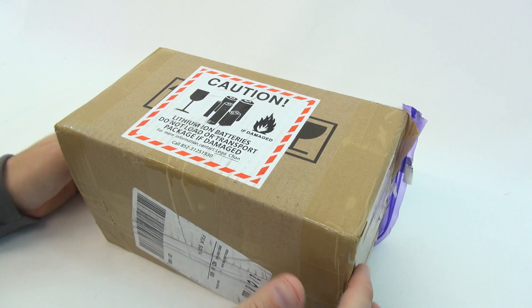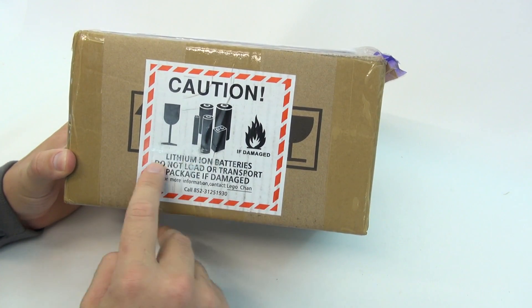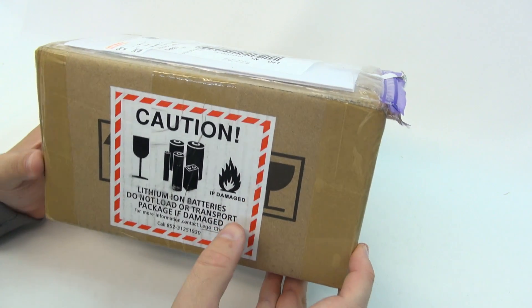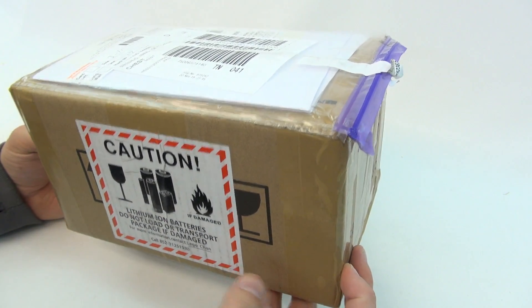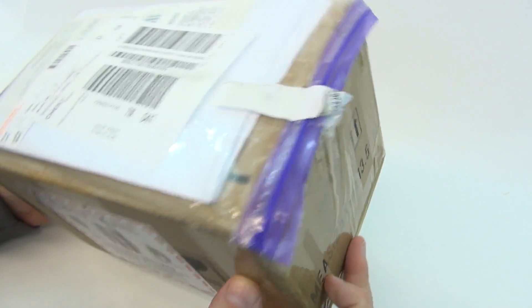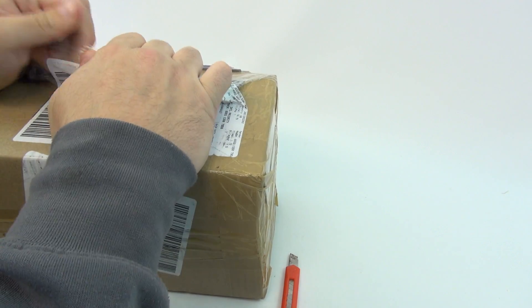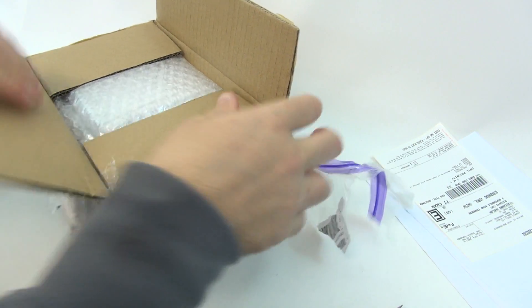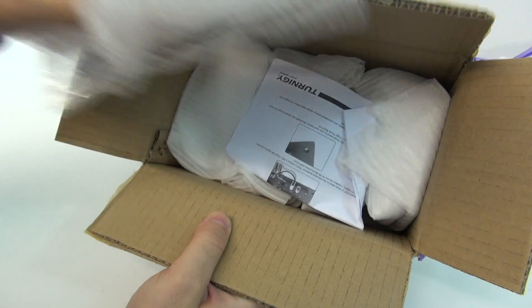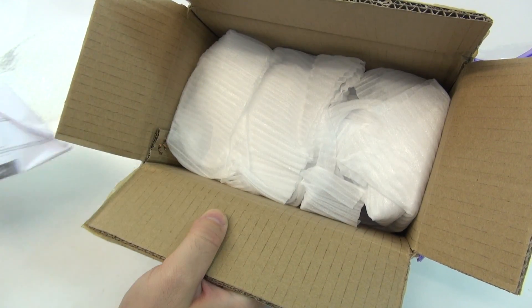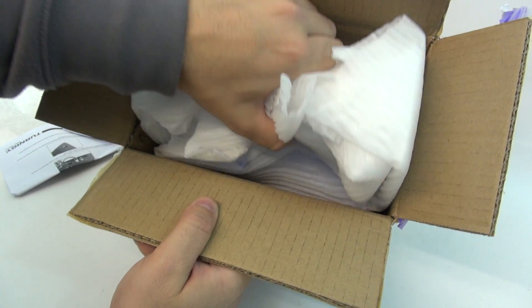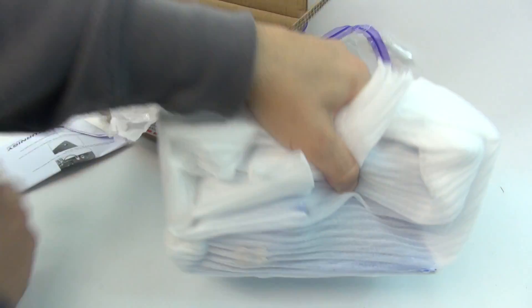Okay, so let's get this box open. One thing that I find unusual is that it says lithium-ion batteries inside. I didn't think the thrust stand came with any batteries. So we'll have to check that out when we get inside. Ah, so no extra packaging. That's it.